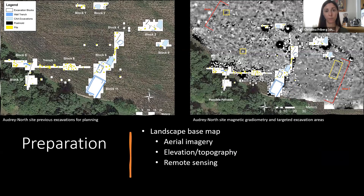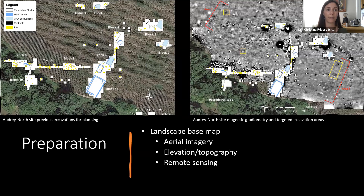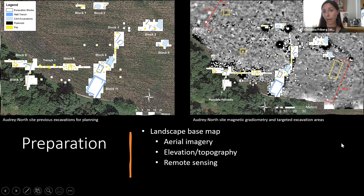In terms of preparation, if you're planning an archaeological investigation or a dig, you might start by making a landscape base map. I have examples here from my dissertation research at the Audrey North site in West Central Illinois. On the left I chose aerial imagery — it's a very flat area, so elevation topography wasn't necessary, but you might choose a topographic map as your base map. I also mapped some previous excavation data from the 1980s. Before anything, I want to know where's already been excavated and what they found. Then I use that to plan some magnetic gradiometry survey — remote sensing — and that's the grayscale map on the right. I use that to determine where to dig, targeting specific magnetic anomalies instead of choosing a random spot.